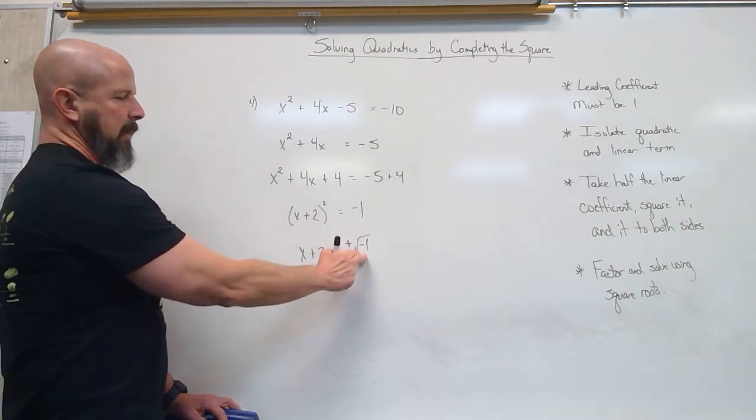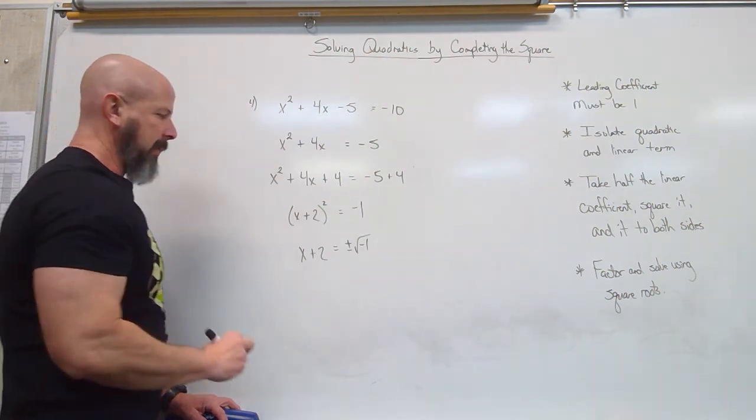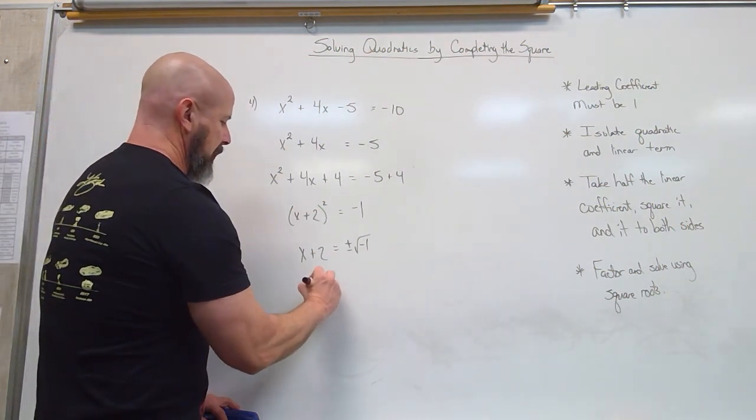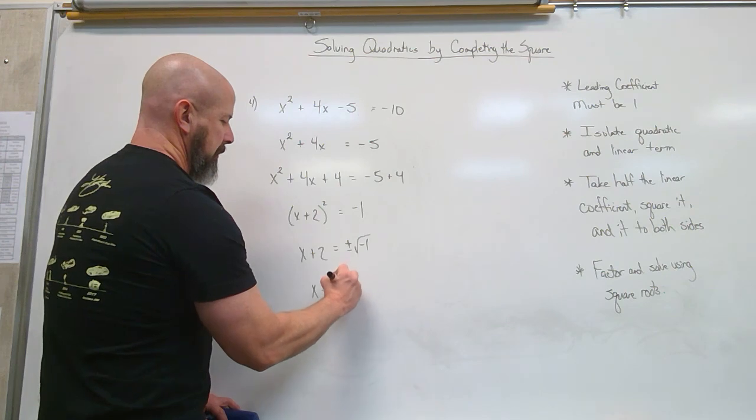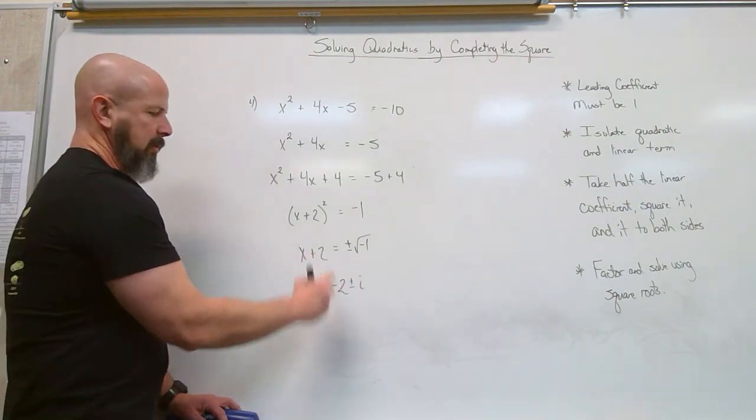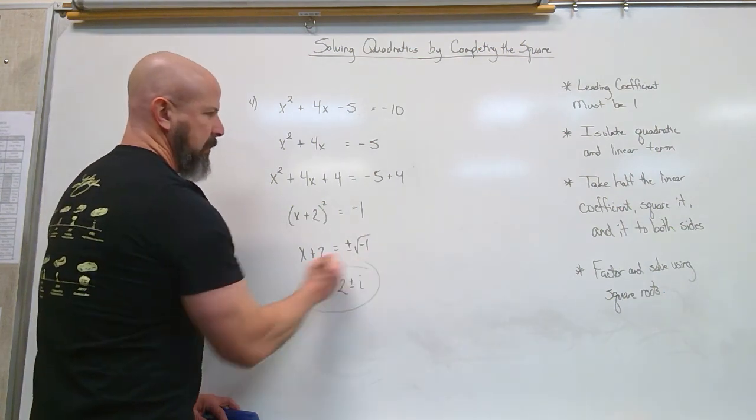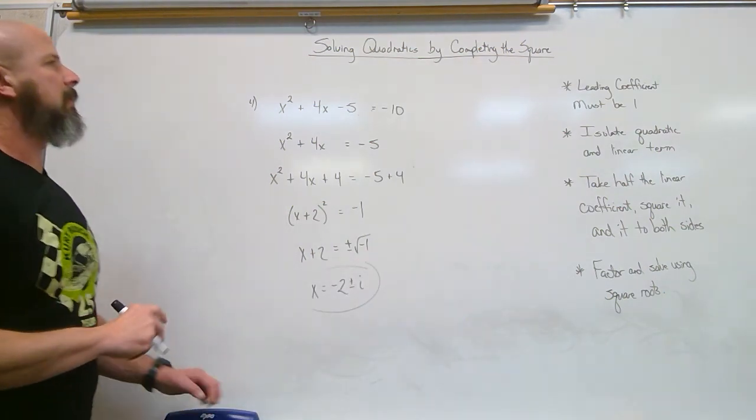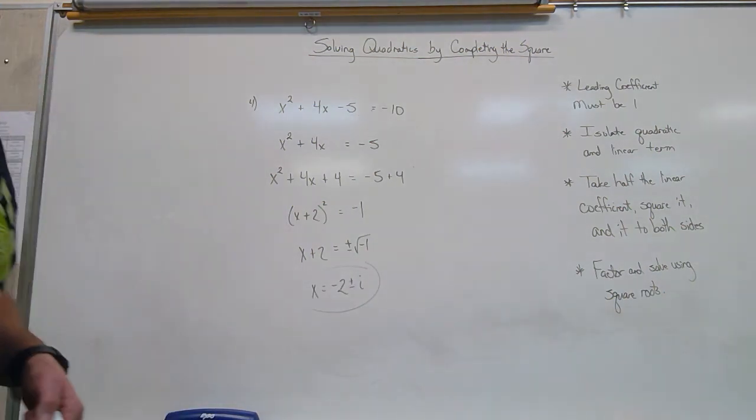And I also got this one up here because now we're getting one of those i's. Anytime we're square rooting, that i can show up. So I would have negative 2 plus or minus i when I move this 2 over. And there's my two solutions.